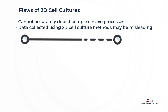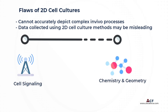Unfortunately, due to their simplicity, 2D models cannot accurately depict and simulate the rich environment and complex processes observed in vivo, such as cell signaling, chemistry, or geometry. As a result, data obtained through 2D cell culture methods may be misleading and non-predictive for in vivo applications.